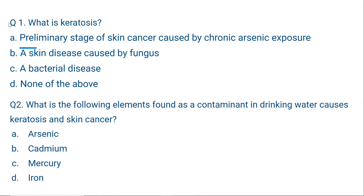Preliminary stage of skin cancer caused by chronic arsenic exposure. Arsenic is a metalloid. When we drink arsenic-contaminated groundwater regularly, it affects the skin — this condition is called keratosis. When keratosis advances, it becomes skin cancer. So keratosis is the preliminary, or primitive, stage of skin cancer. The correct option is A.